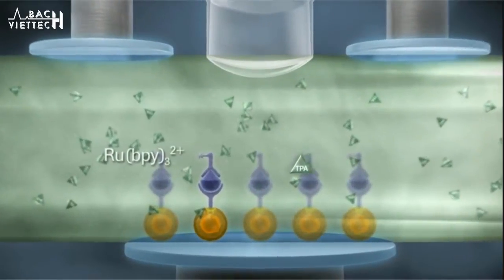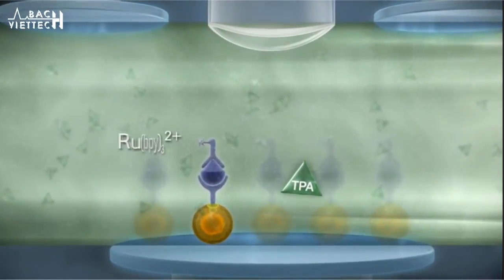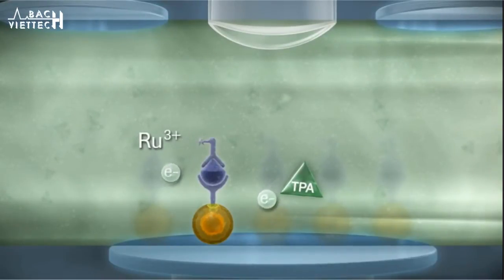Voltage triggers the ECL reaction. Ruthenium and TPA are excited in the process. The TPA radical then serves as a reductant, enabling ruthenium to return to its base state with the release of light.